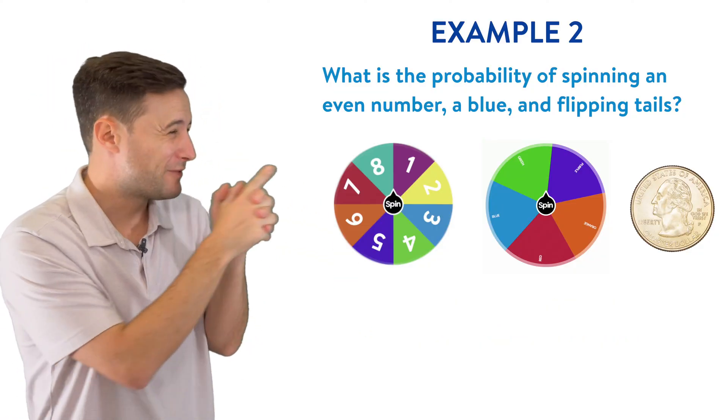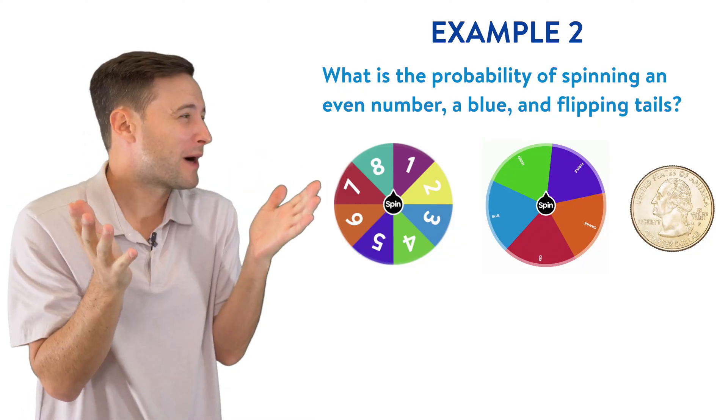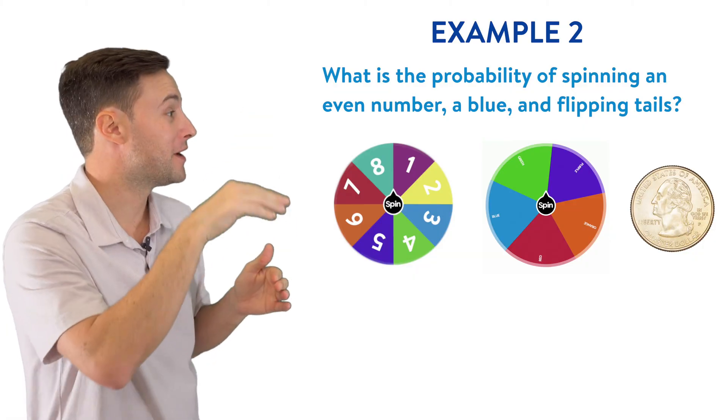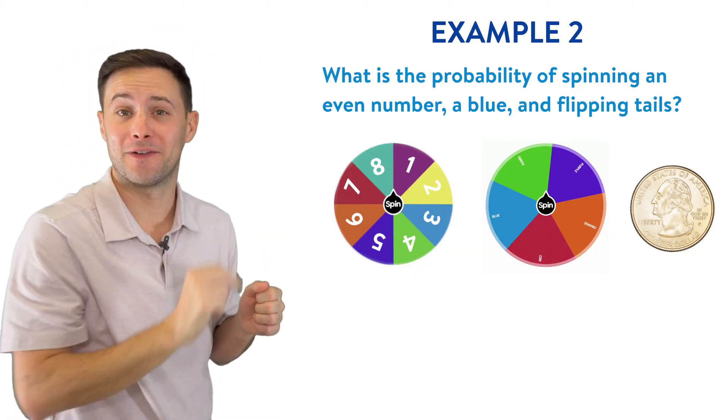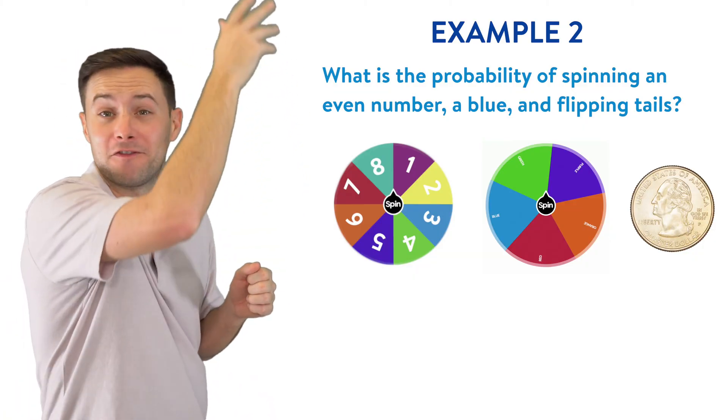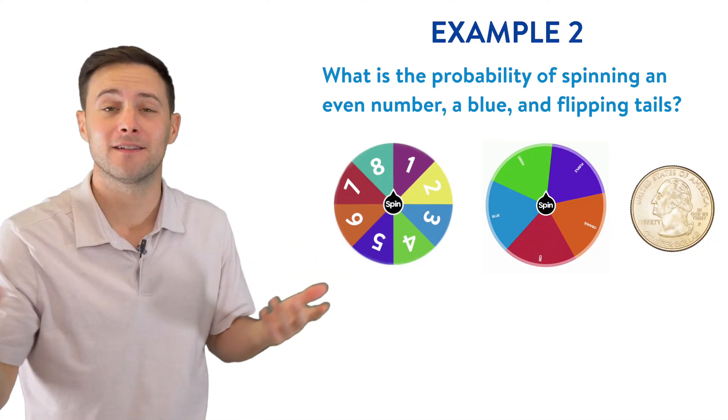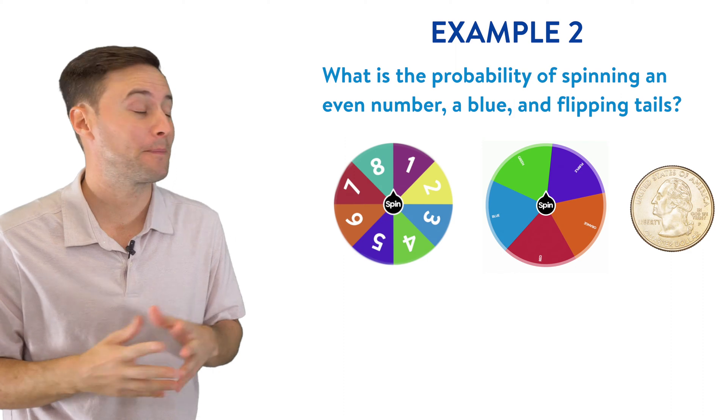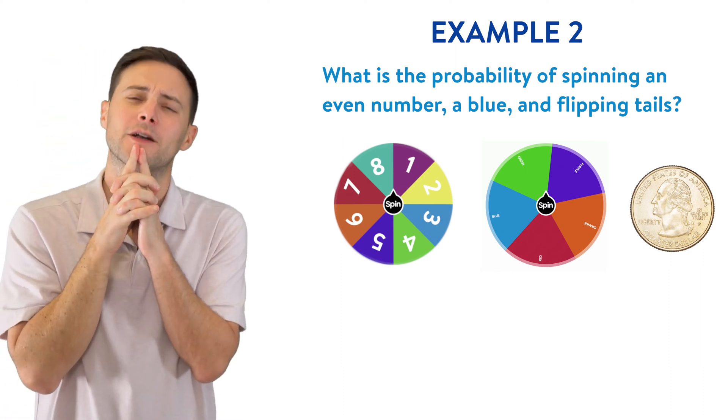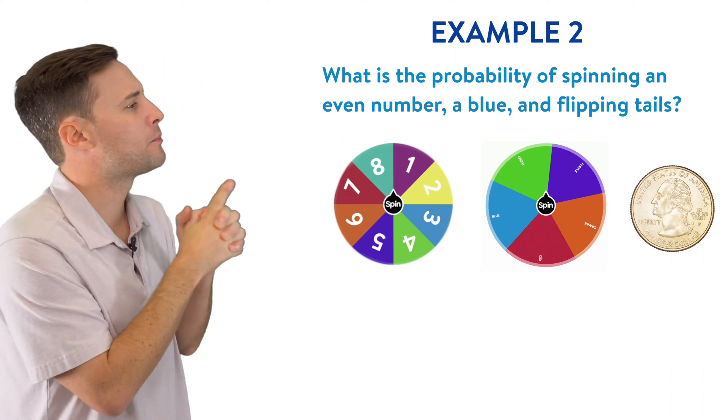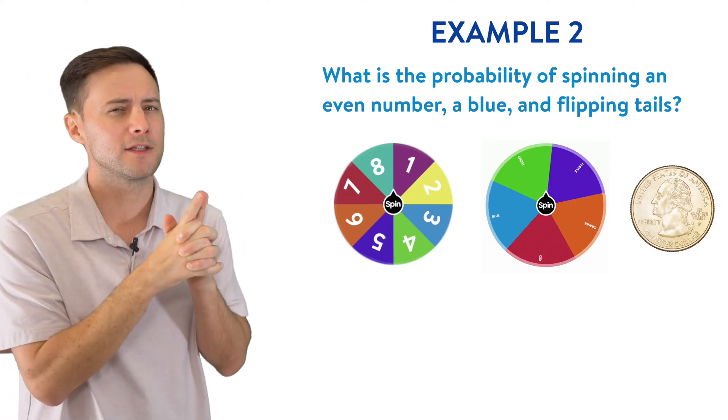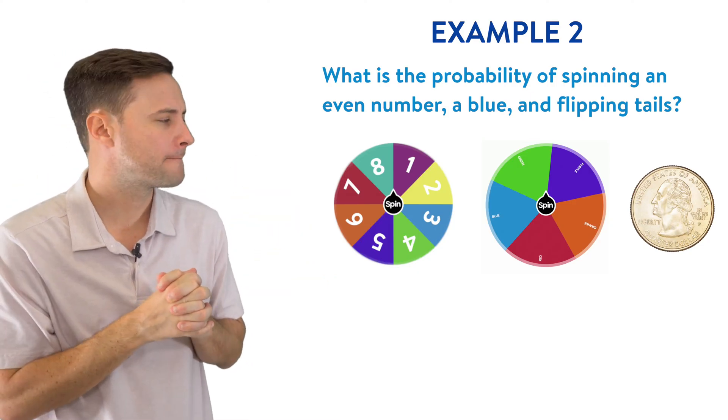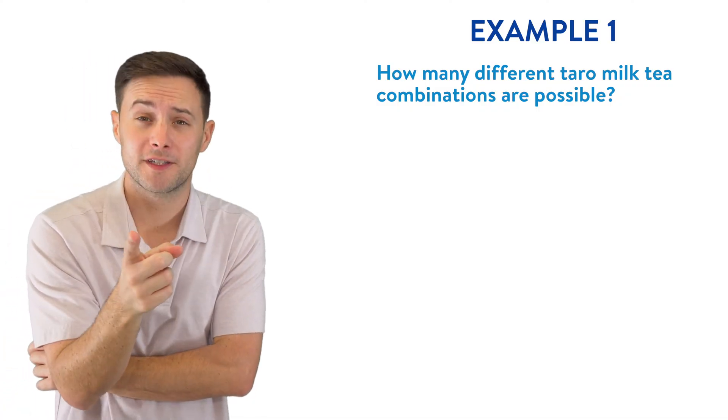Obviously, if you look, I don't really want to make a tree diagram again and start off with eight different numbers, and then five different colors, and then head or tails. That's going to be a massive tree diagram. So let's think, is there another way that can help us find out the sample space? How many different possible outcomes are there?